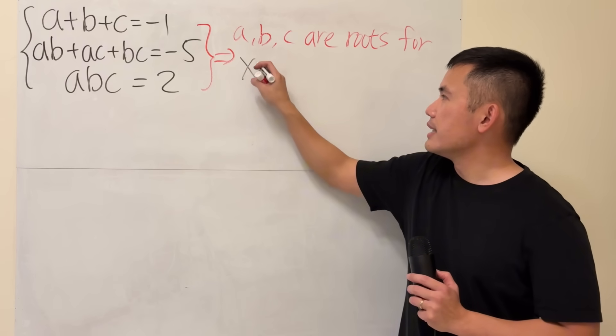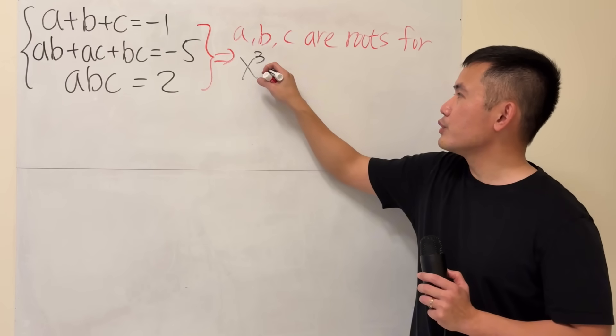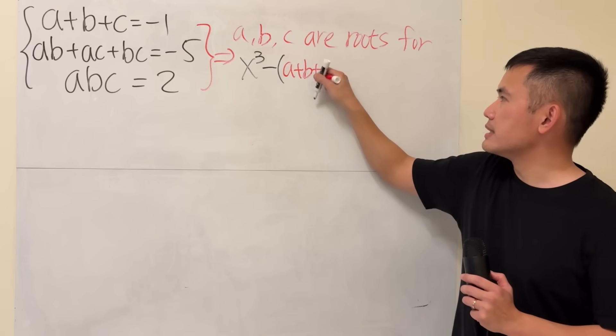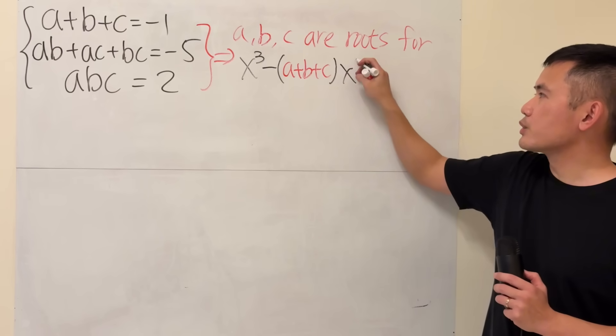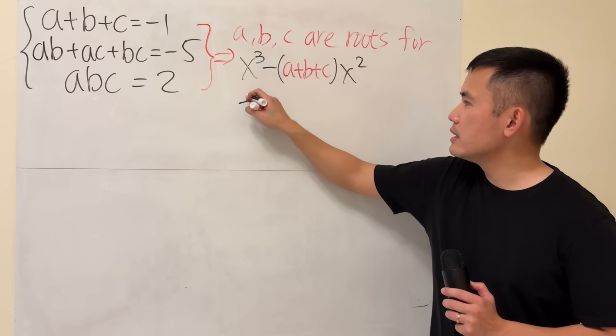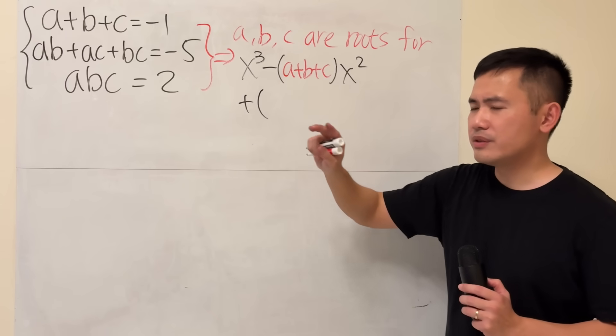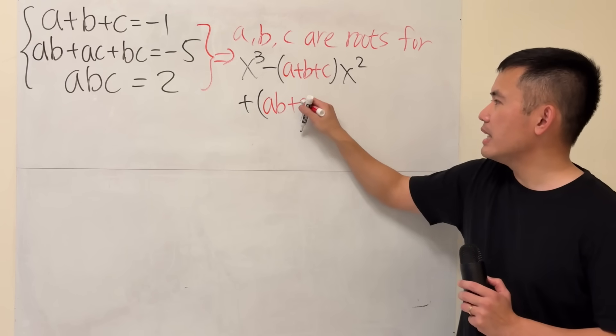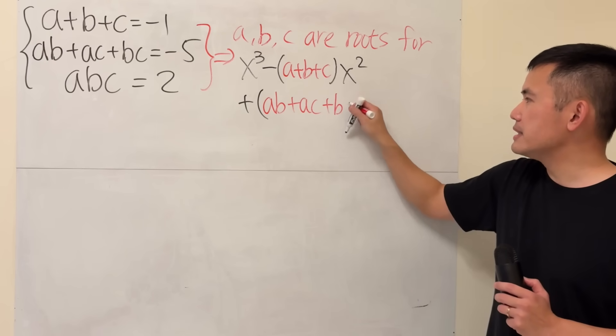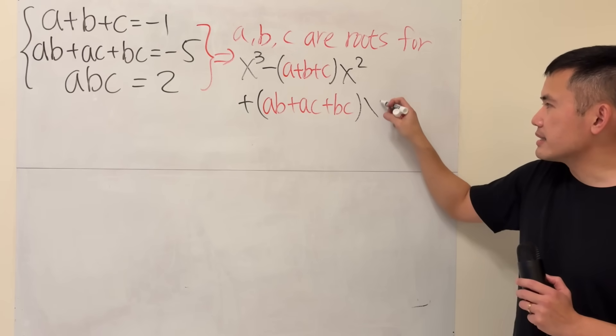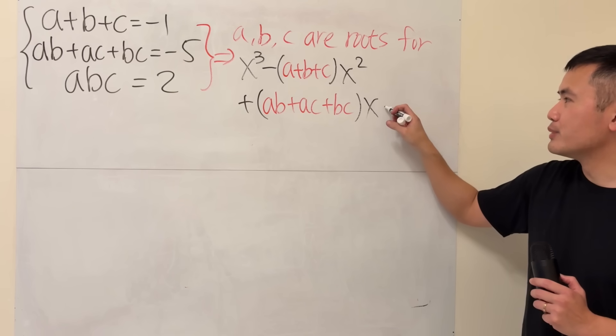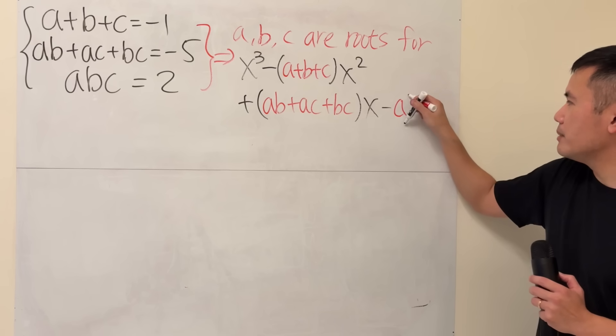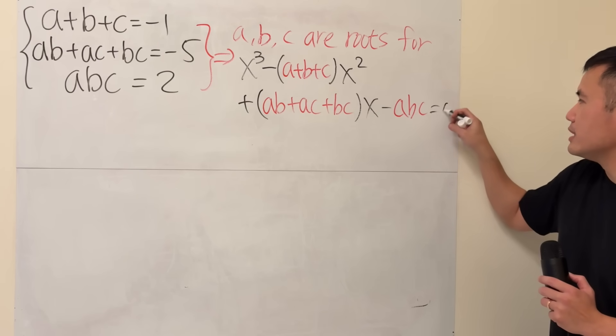Starting with X cubed, and then we are going to subtract. Here we will have A plus B plus C, and then X squared. And then we are going to add the product of any of the two letters and then you add them up. So we have AB plus AC plus BC, and then X. And lastly, we will have to subtract the product of all three, ABC. And all that is equal to zero.